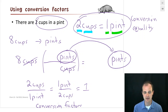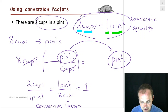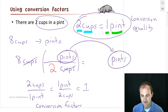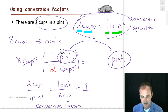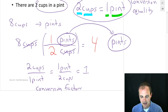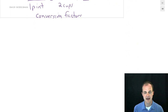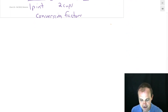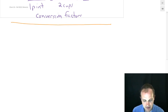Two cups is one pint. Everywhere there's cups, I put a two in front of it. There's a one in front of pints, so everywhere there's a pint, I put a one in front of it. And we get the answer we expected: four pints.